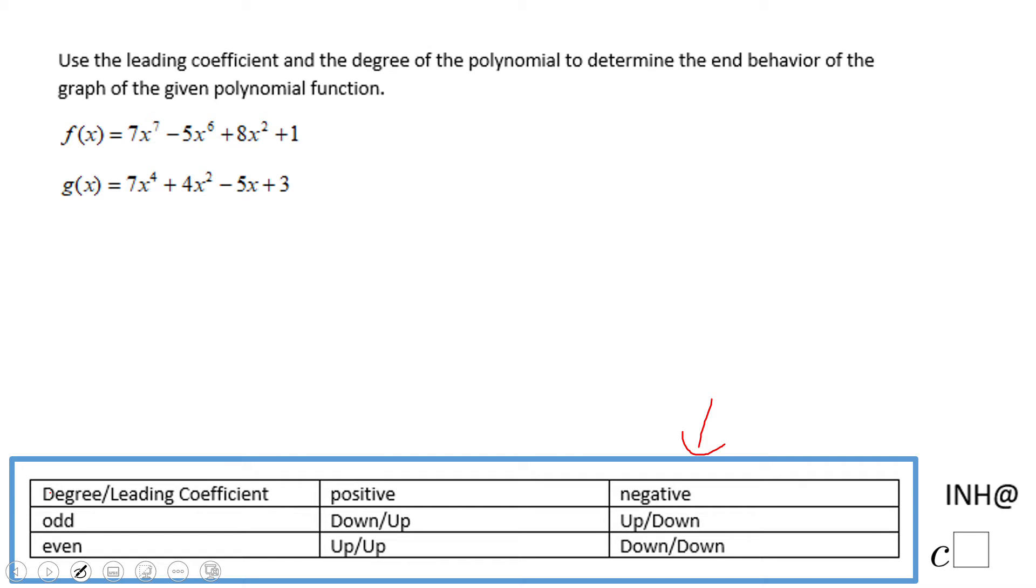For f(x), we need to look at the degree. This is degree seven, the largest exponent, and the leading coefficient is positive. So odd degree and positive leading coefficient - that's the choice we're going with. The graph is down/up for f, something like that. We expect maybe more turning points since the degree is seven.